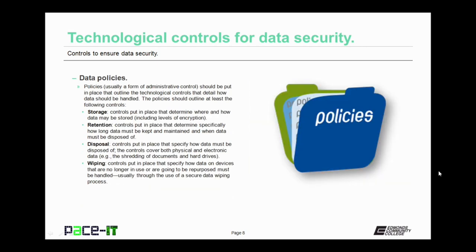Data policies are not necessarily a technological control, but they can be used to help implement technological controls. Policies — usually a form of administrative control — should be put in place that outline the technological controls detailing how data should be handled. The policies should outline at least the following controls. There should be storage controls that determine where and how data may be stored, including the levels of encryption that will be required.